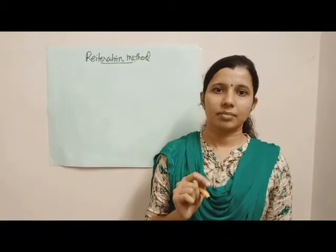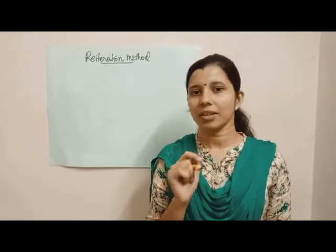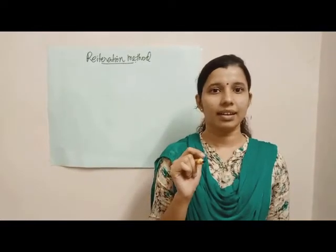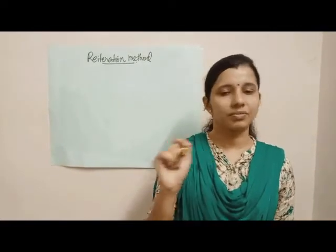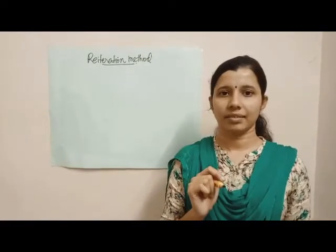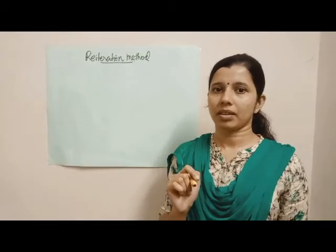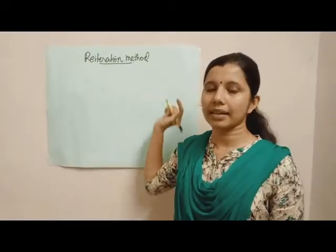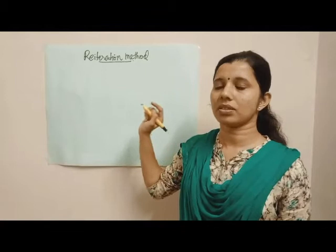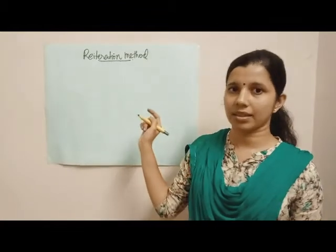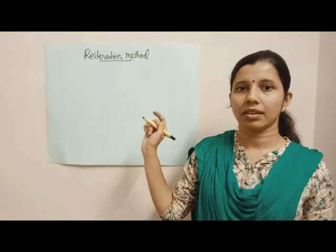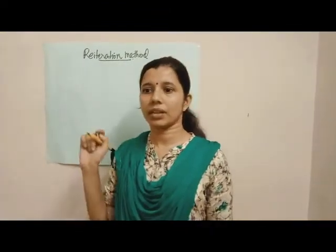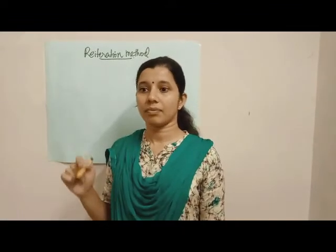The theodolite is a commonly used instrument for measuring horizontal angle and also vertical angle. In this experiment, before going into the re-iteration method or its procedure, first recall the portions taught in the previous class.